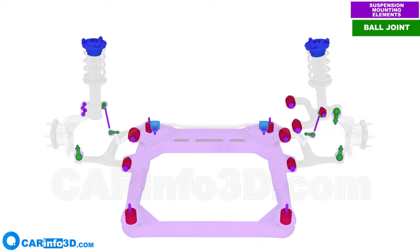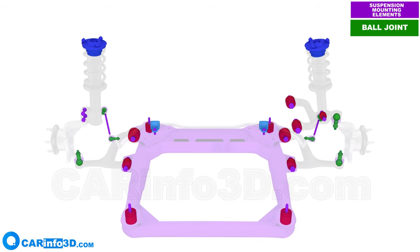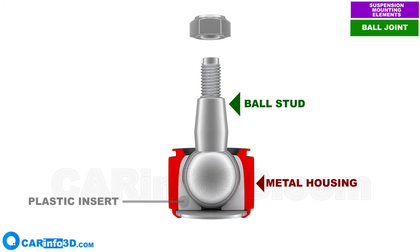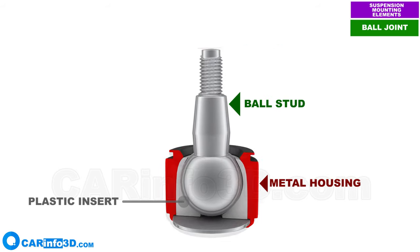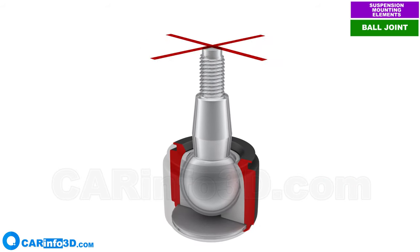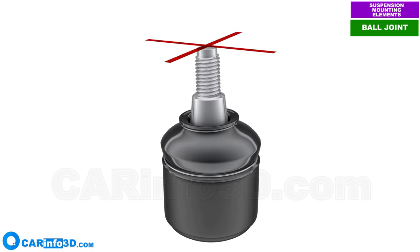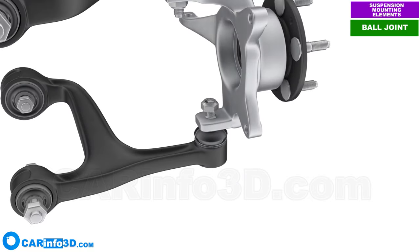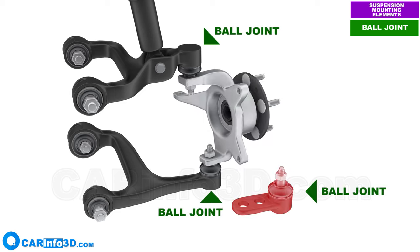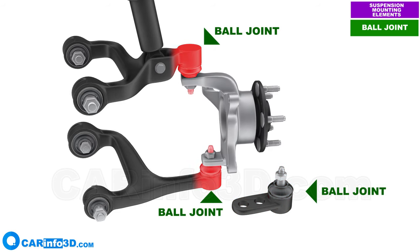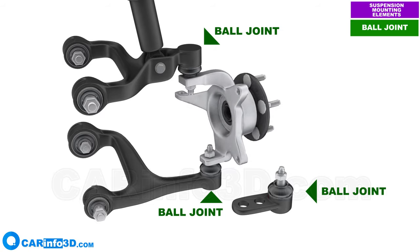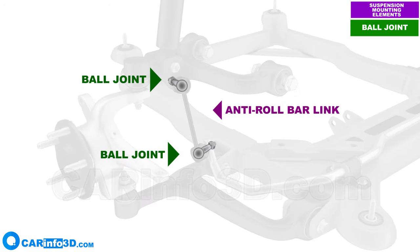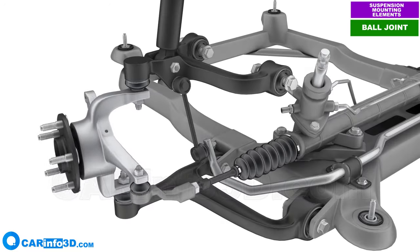The ball joint. A typical ball joint in the suspension system is made up of a ball stud fitted in a metal housing with a plastic insert in between. The ball joint can swing and rotate, allowing the components it connects to move relative to each other. It joins the steering knuckle with the control arms. The ball joint can be detachable or integrated with the control arm to form a single assembly. Ball joints are also found in anti-roll bar links, the outer tie rod, and the inner tie rod.